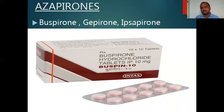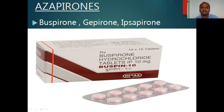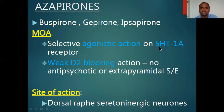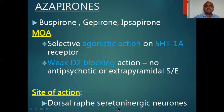The next class is azapirones — very good drugs. Three drugs are there: buspirone, gepirone, and ipsapirone — all are '-pirones'. Buspirone is available as hydrochloride tablets, 10 mg, by the Intas pharmaceutical company. The mechanism of action is the same for all three: they act as agonists at the 5-HT1A (serotonin) receptor but block the D2 receptor. One is agonist, one is antagonist. There are no antipsychotic or extrapyramidal side effects. The site of action is the dorsal raphe serotonin neurons.